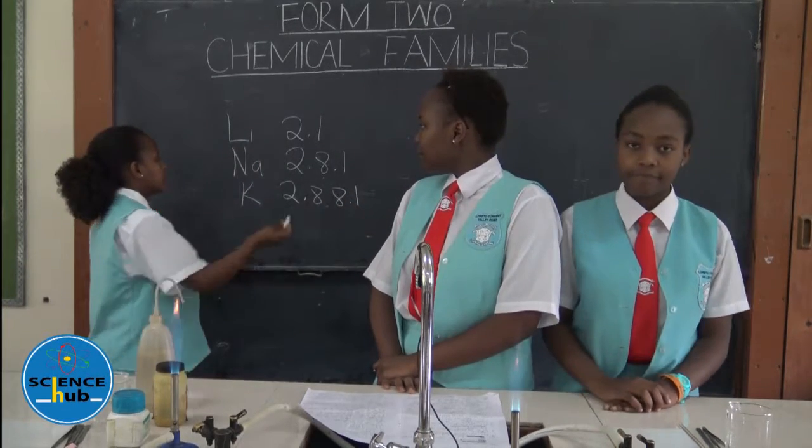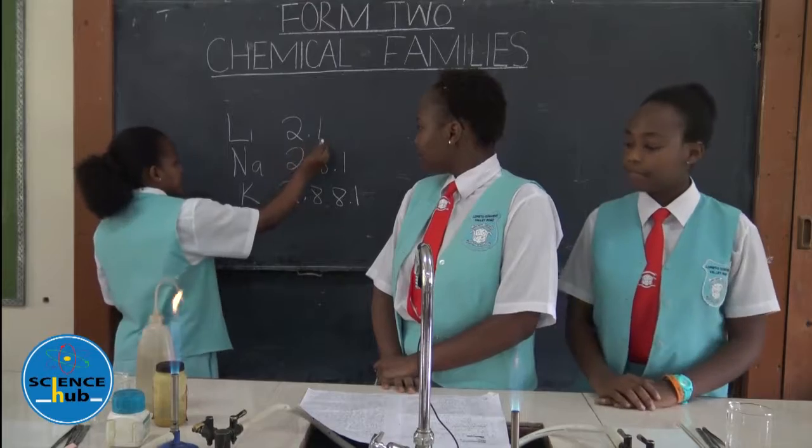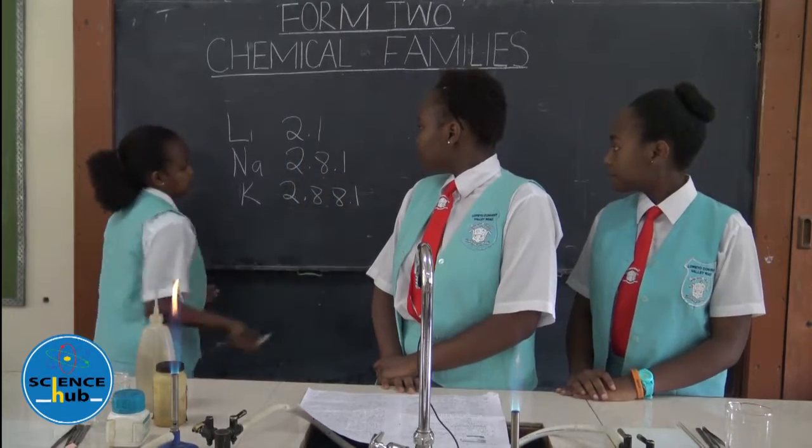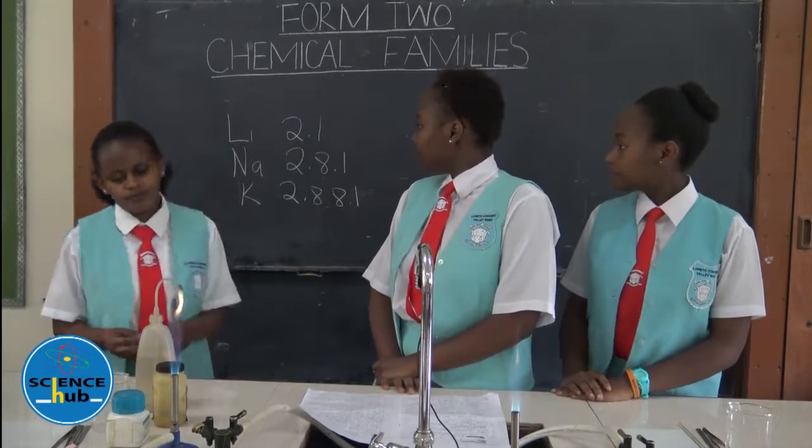As you can see, all the elements have one electron at the outermost energy level.